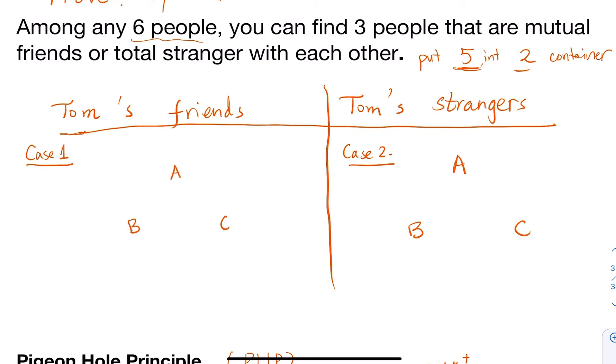Here we assume the relationships are mutual, so it cannot be the case where Tom is a friend of A but A is not a friend of Tom.